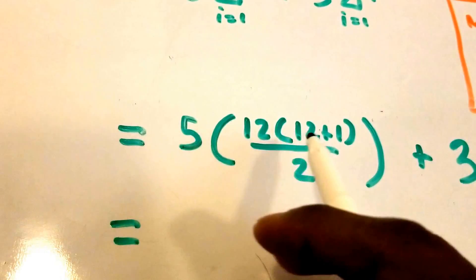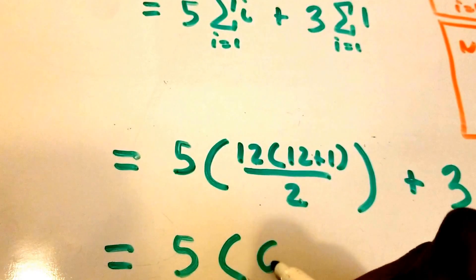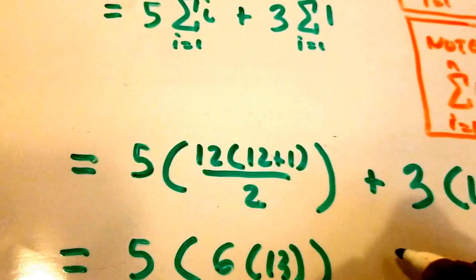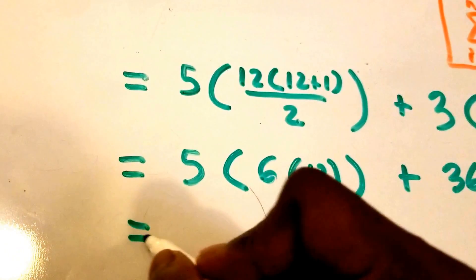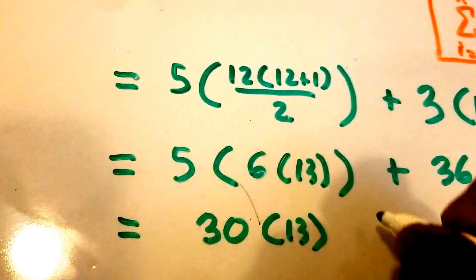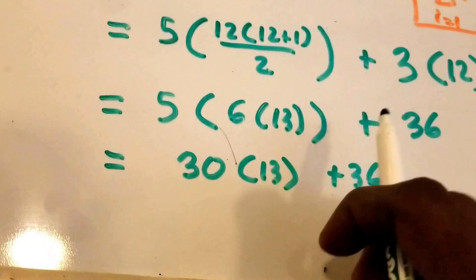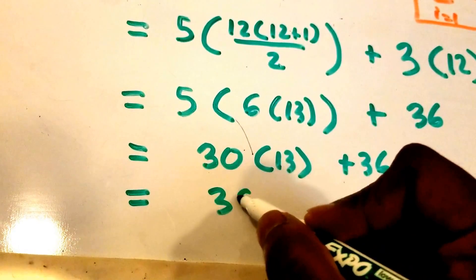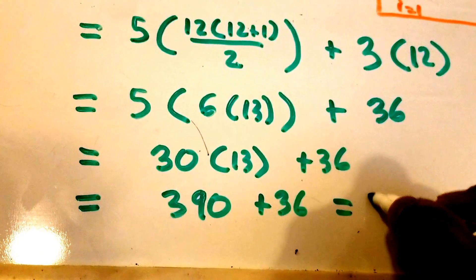Now let's compute. We get 5 times — doing 12 divided by 2 gives us 6 — times (12 plus 1), which is 13. Plus 3 times 12 is 36. So we get 5 times 6, which is 30, times 13, plus 36. That gives us 390 plus 36, which equals 426.